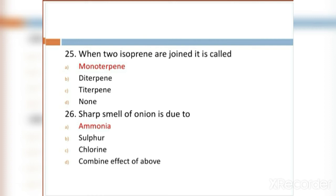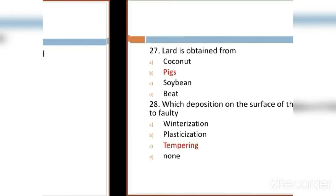MCQ 26: The sharp smell of onion is due to: Option A: ammonia. Option B: sulfur. Option C: chlorine. Option D: combined effect of the above. Option A, ammonia, is the right answer.